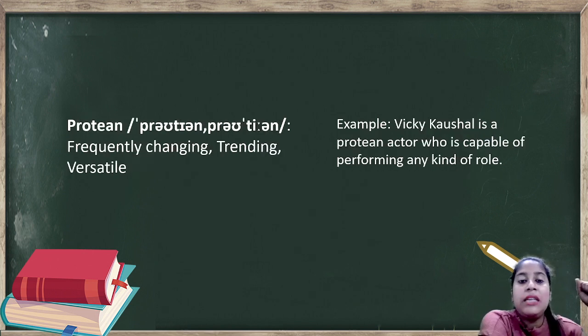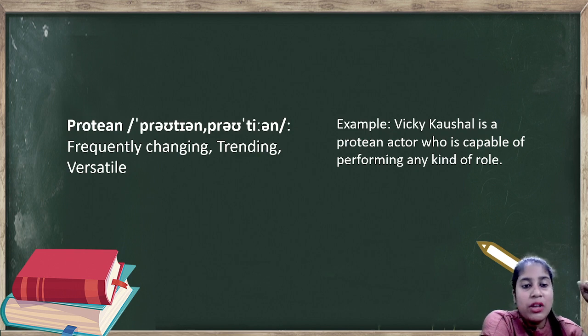Next word is protean. Protean means frequently changing. This is not the protein from food - you can tell from the spelling. Protean means frequently changing, trending, or versatile. Example: Vicky Kaushal is a protean actor who is capable of performing any kind of role. Someone who is very versatile, you know - put him in anything, he adapts. Put him in any fashion, he looks good. Give him any role, he performs well. So protean means multi-talented or someone who is very versatile towards something.